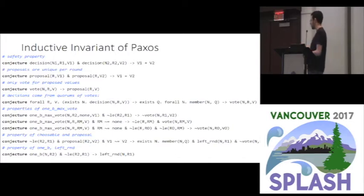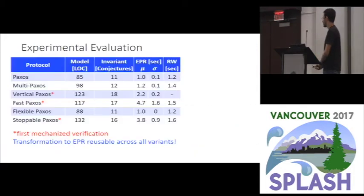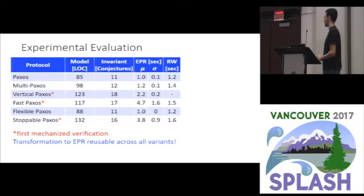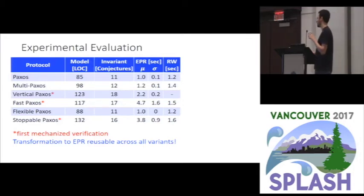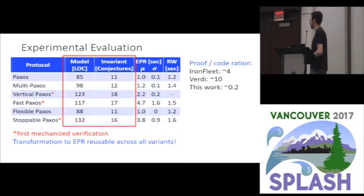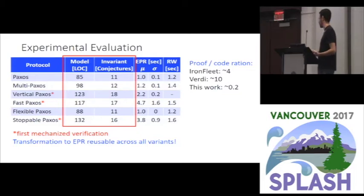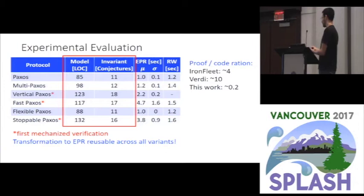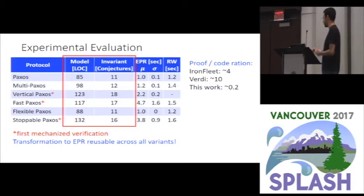Using first-order logic and this decidable fragment, I think the invariants are human-readable and friendly and not obscure. We verified several variants of Paxos. For some of them it is the first mechanized proof. The transformations to EPR — the judgments about which derived relations to add and which rewrites to do — were completely reusable across all of these variants. The number of conjectures, roughly the number of lines needed to verify every model, compares very favorably to the current state of the art: we got a much better ratio between the proof and the model, because so much more is automated by sending these formulas to an SMT solver that we know will terminate since we are in the decidable fragment.